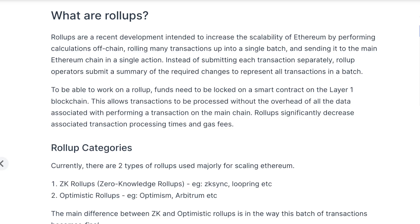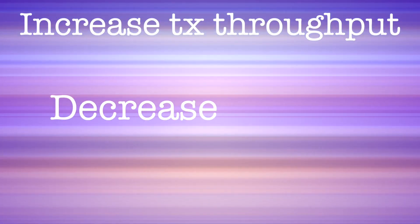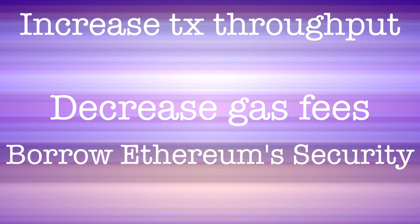ZK Sync scales Ethereum by batching transactions together and then posting the proof that those transactions in that batch are valid to the Ethereum mainnet. This approach allows ZK Sync to increase transaction throughput, decrease gas fees, and borrow a large degree of security from the Ethereum mainnet.